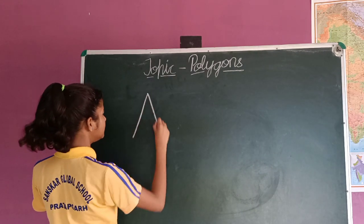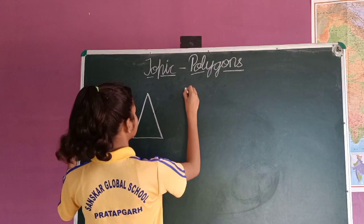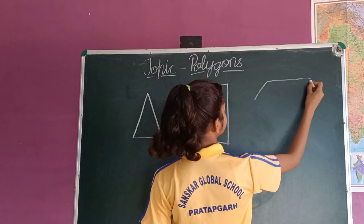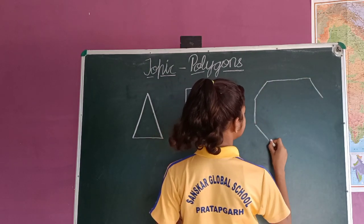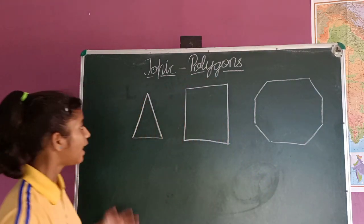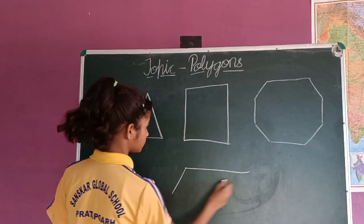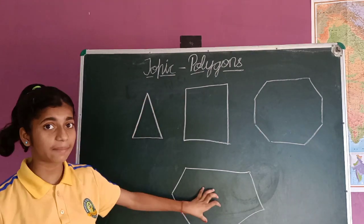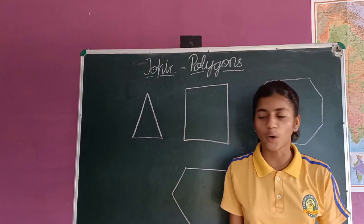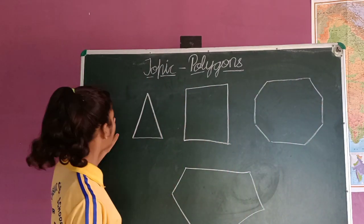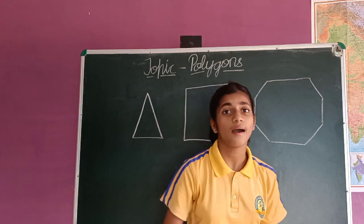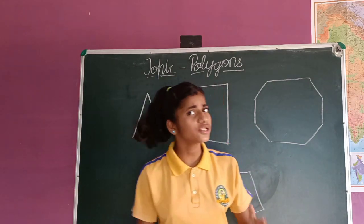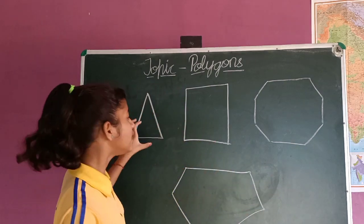I will write some shapes on the board. I have drawn 1, 2, 3, 4 shapes on this board. So I am saying that these all shapes are known as polygons. But how do I prove that these all shapes are polygons? That means, what are the similarities to be found in all these shapes?